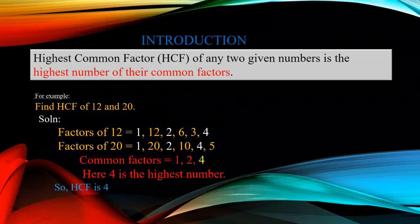HCF – Highest Common Factors of any two given numbers is the highest number of their common factors. HCF is the highest number among the common factors. That is, we have to find factors and then common factors. At last, we have to conclude that the highest number is the HCF.